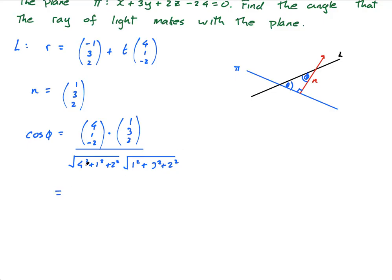And this equals, let's do it here, this dot this is 4 + 3 - 4 is 3. So it's 3 over the square root of 16, 17, 21, times the square root of 9, 10, 14. This is cos of theta, no, sorry, this is cos of phi, be careful.